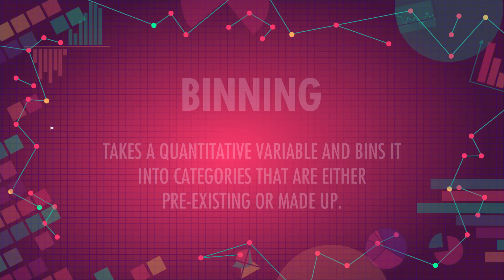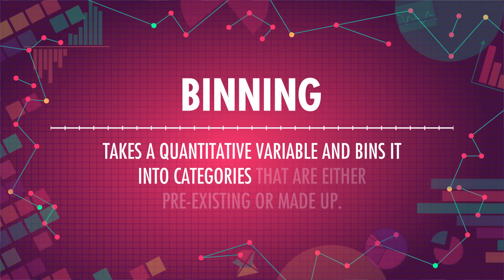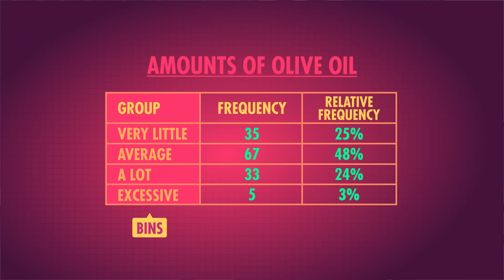Let's loop back to quantitative data, which, as you'll remember, have a meaningful order and consistent spacing. Frequency tables can also be used to display quantitative data, like age or height or ounces of olive oil in your house. We just have to create categories out of our quantitative data first. We do that with a process called binning. Binning takes a quantitative variable and bins it into categories that are either pre-existing or made up. For example, I can say that 0 to 15 ounces of olive oil is very little, 16 to 32 ounces is average, 33 to 49 ounces is a lot, and 50 plus ounces is excessive. Once I've binned my data, I can create a frequency table or relative frequency table, just like with our pasta example.